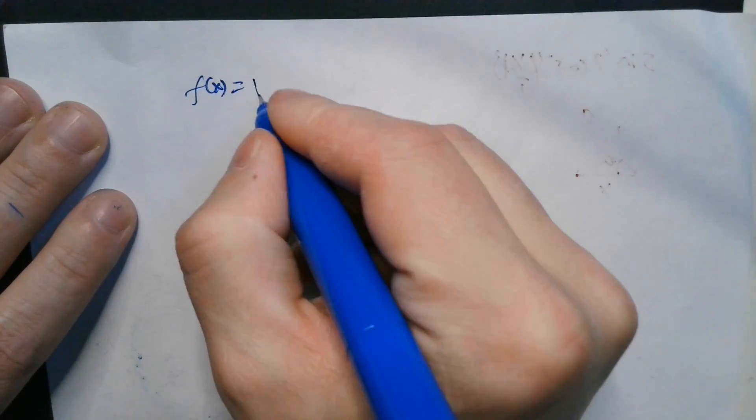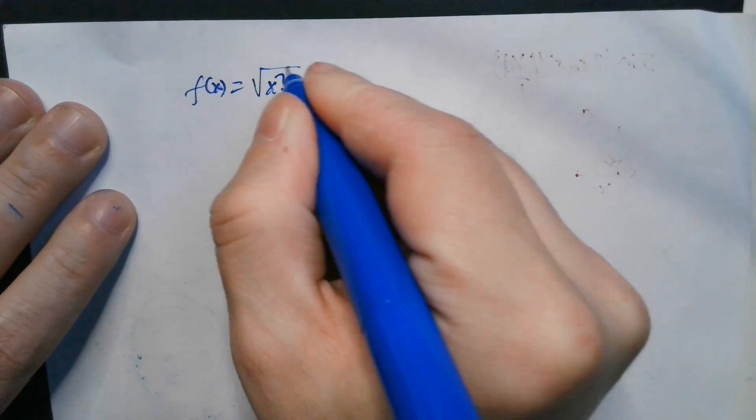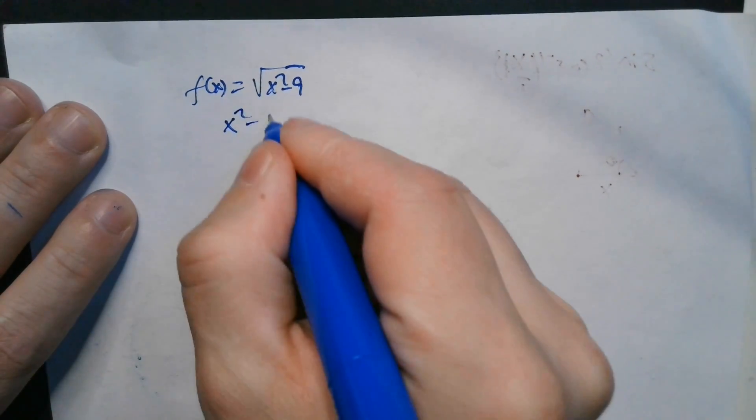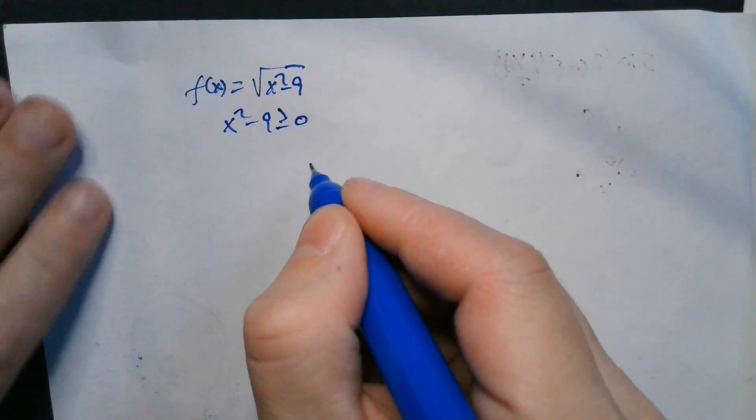So for f of x, it's equaling the root of x squared minus 9 is the domain. So you've got to have x squared minus 9 must be greater than or equal to 0.